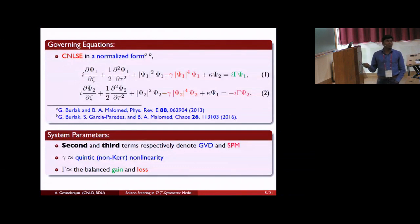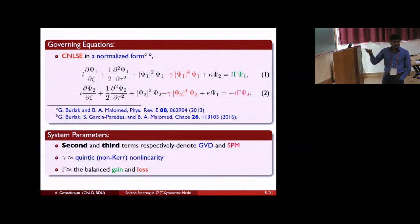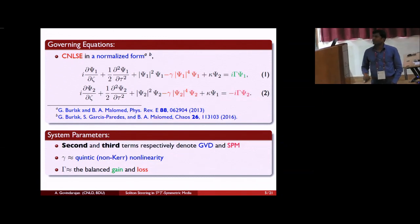Mathematically, this model is governed by coupled nonlinear Schrödinger equations in this form. Here, the second and third terms are respectively group velocity dispersion and self-phase modulation, which are scaled to be one. And this gamma is nothing but the defocusing nonlinearity. The inter-core coupling coefficient has been denoted by the coupling parameter kappa. And gamma, which makes the system PT-symmetric, is nothing but gain and loss parameter.